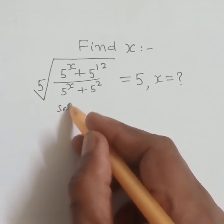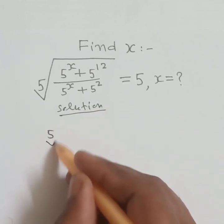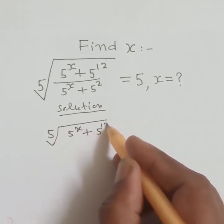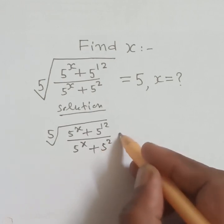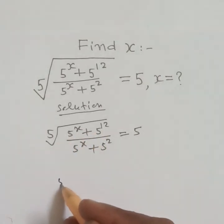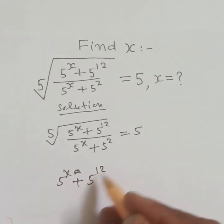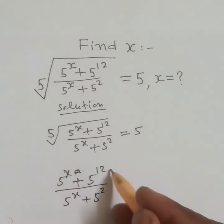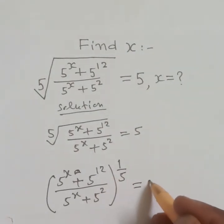Solution. Given: the fifth root of 5 to the power x plus 5 to the power 12, divided by 5 to the power x plus 5 squared, is equal to 5. This is equal to 5 to the power x plus 5 to the power 12, divided by 5 to the power x plus 5 squared, whole to the power 1 by 5, is equal to 5.